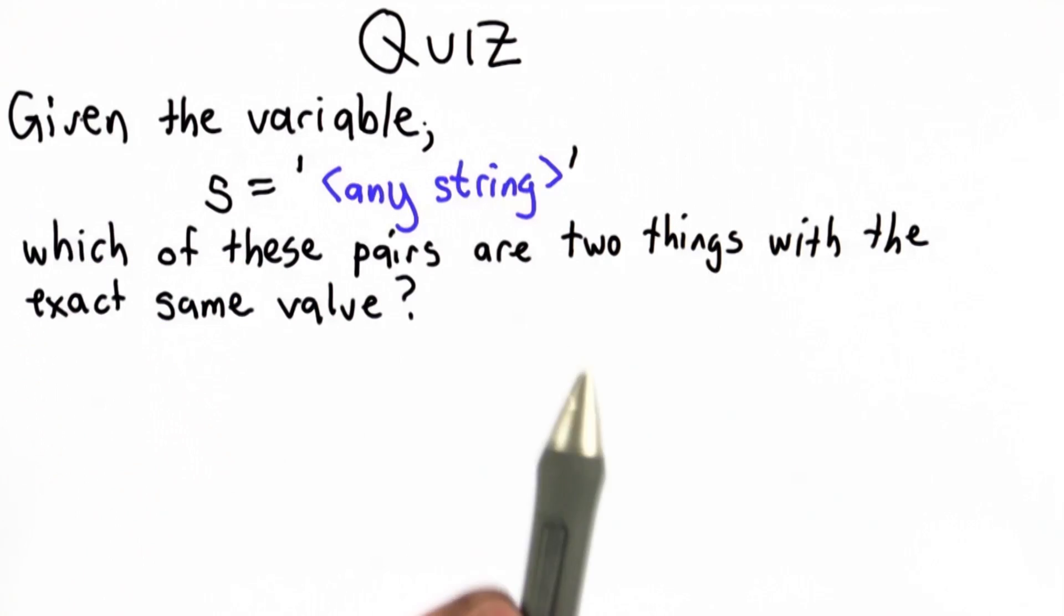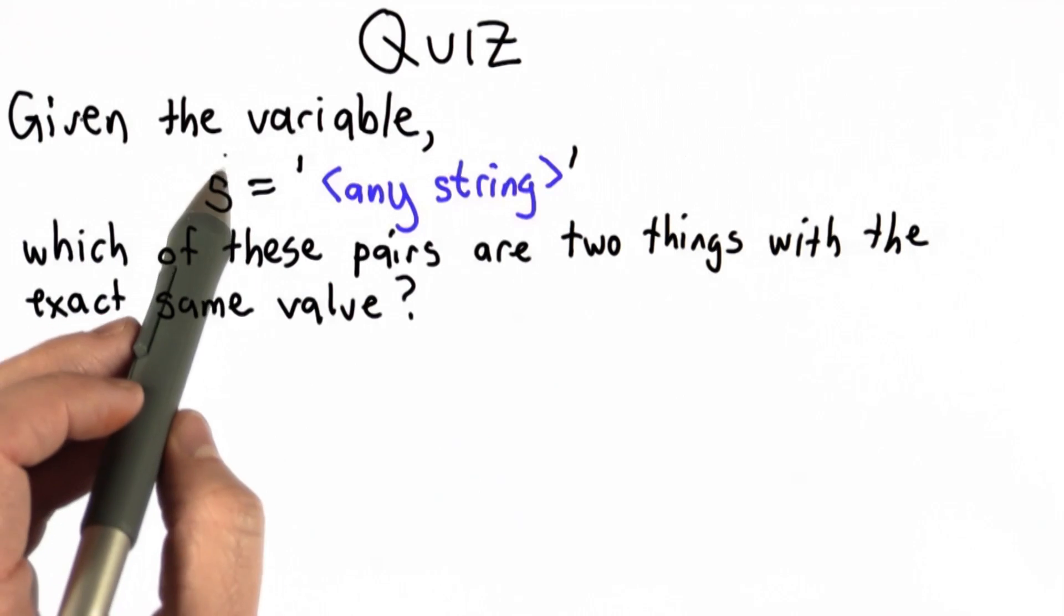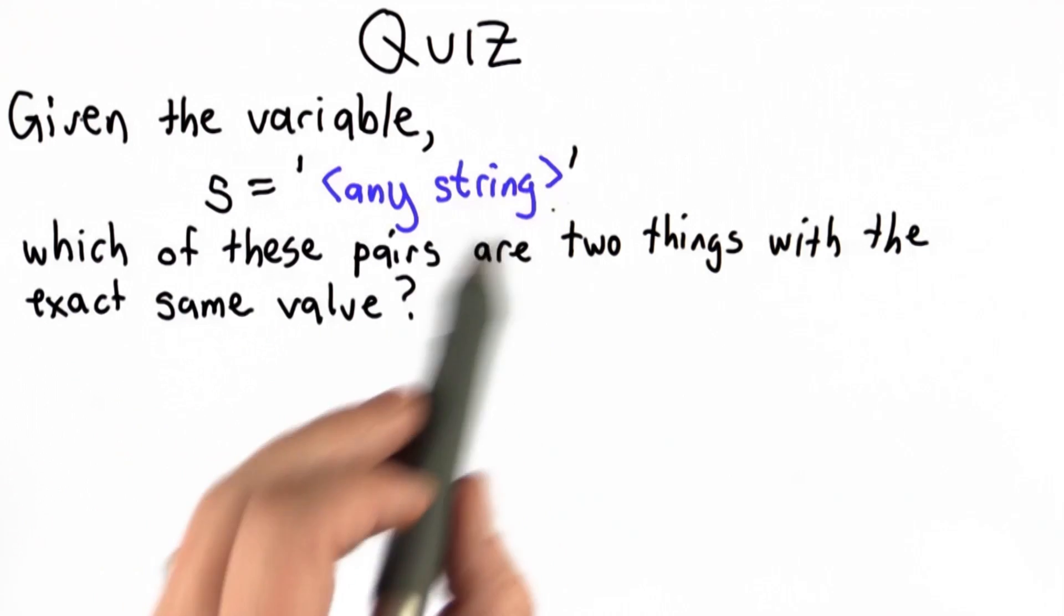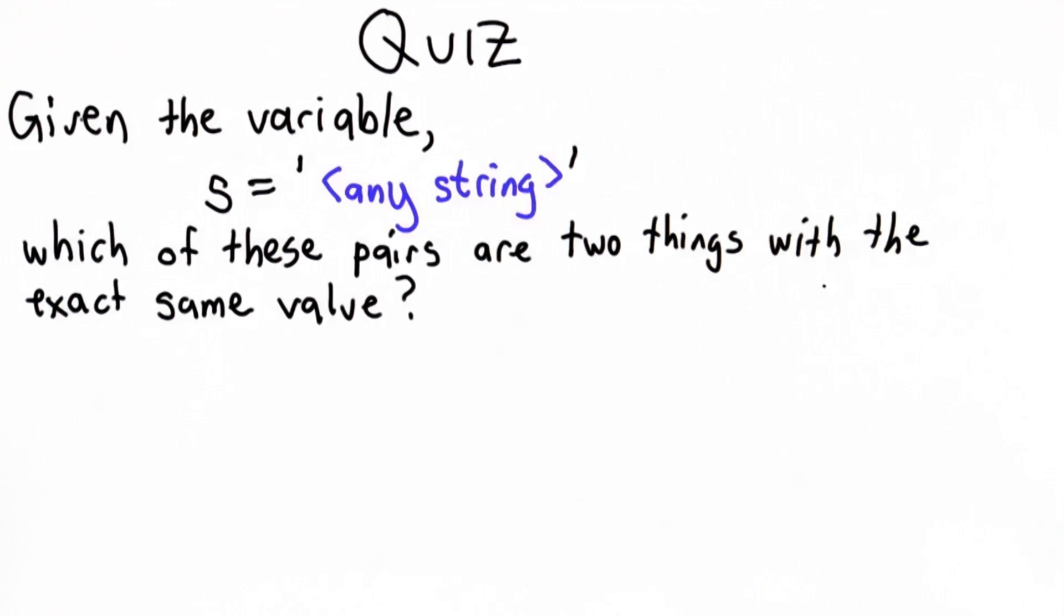So the question is, given any variable, we're going to introduce the variable s and we're going to assign it any string. Which of the pairs below are two things where both elements of the pair are the same exact value? Here are the choices. Check all the choices where the first thing and the second thing have exactly the same value.